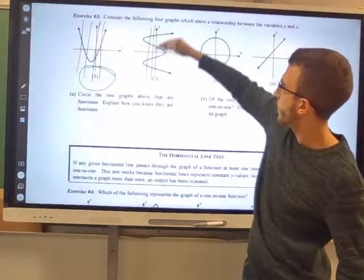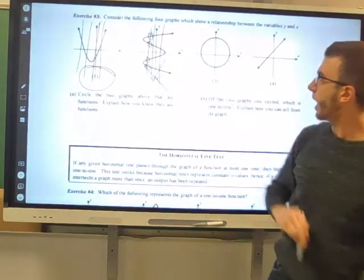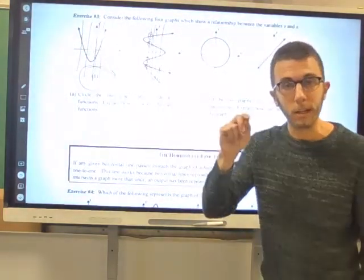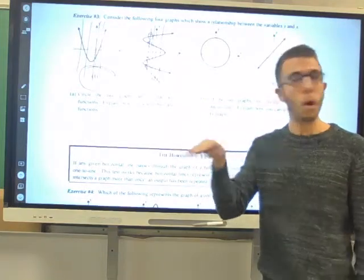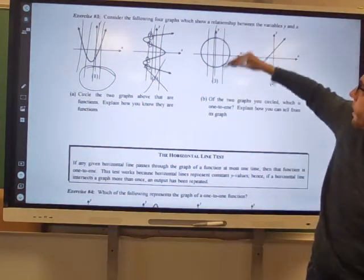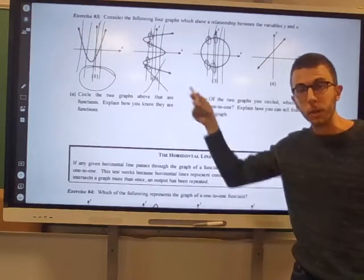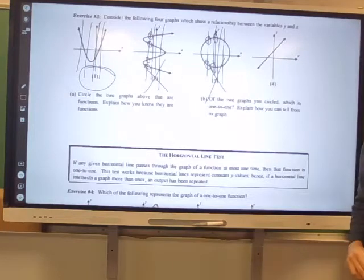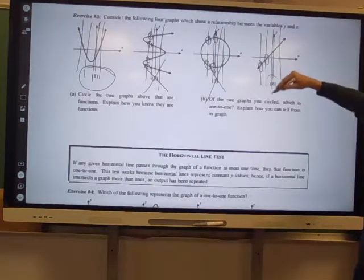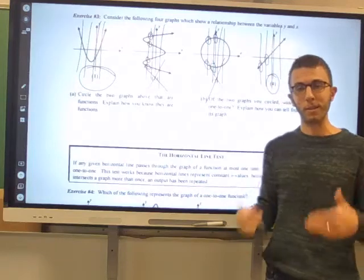What about number two? Testing with vertical lines — one, two, three, four. Holy cow, any vertical line hits that graph four times. Twice is too many, so four times? No — number two is not a function. Number three: with a circle, each vertical line hits twice, so three is not a function. Number four is a nice diagonal line, and each vertical line only hits once. So graphs one and four are functions because they pass the vertical line test.